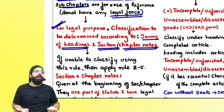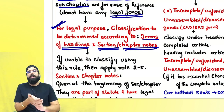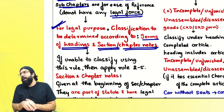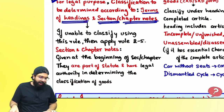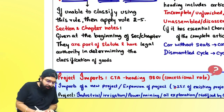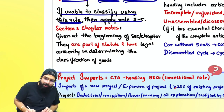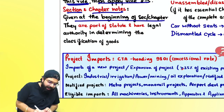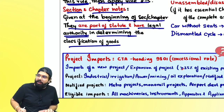Remember for the exam: when rule number one is asked, you have to say that classification is to be done as per the terms of the heading and as per chapter notes and section notes, because section notes and chapter notes are part of the statute. Section notes and chapter notes are given at the beginning of a section or chapter and have legal authority in determining classification of goods.